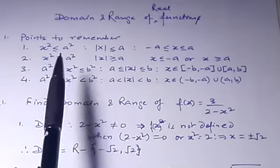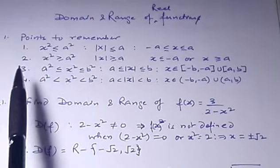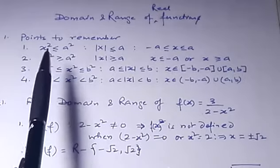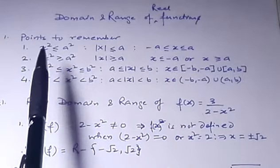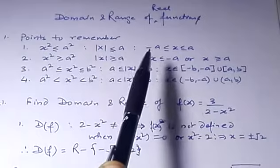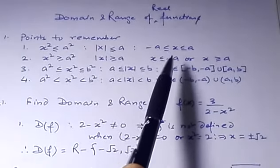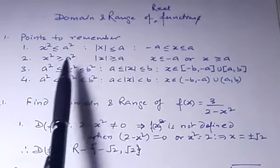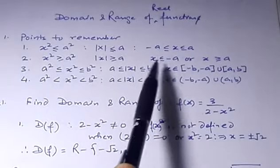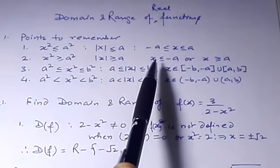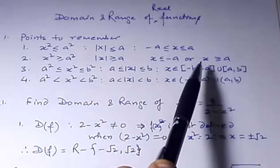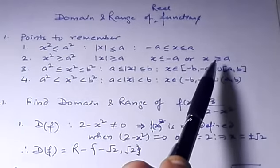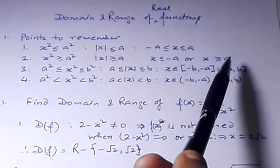First, we need to learn some key points, because if you have these points, then you can easily answer questions. If x squared is less than a squared, then x will be between minus a and a. If x squared is greater than or equal to a squared, then x will be equal to minus a or less, or x will be equal to a or greater.